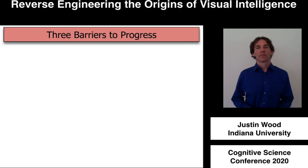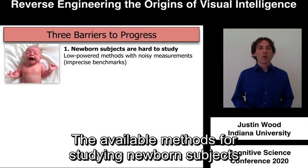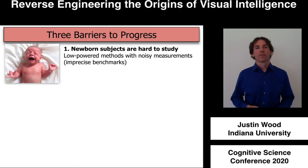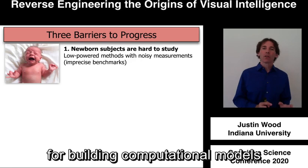I believe that three major barriers have hindered progress. First, newborn subjects are hard to study. The available methods for studying newborn subjects are low-powered and produce noisy measurements, so these methods don't produce accurate benchmarks for building computational models of the origins of intelligence.